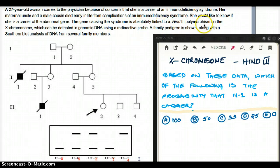Now, polymorphism meaning there can be more than one form, right? Two alleles could be different. On the X chromosome, which can be detected in genomic DNA using a radioactive probe. A family pedigree is shown along with a southern blot analysis of DNA from several family members. Okay, so this is the pedigree, and that is obviously the result of the southern blot.